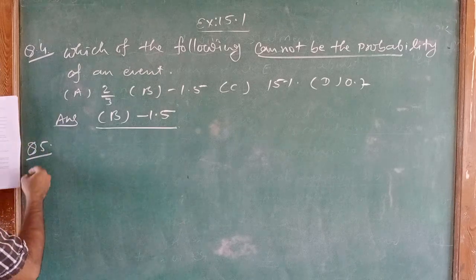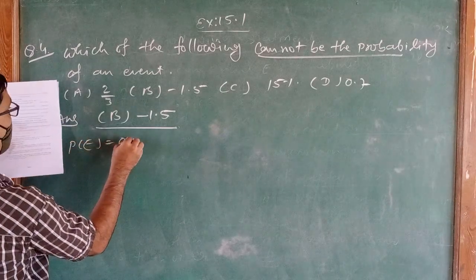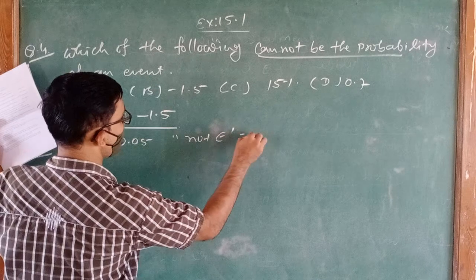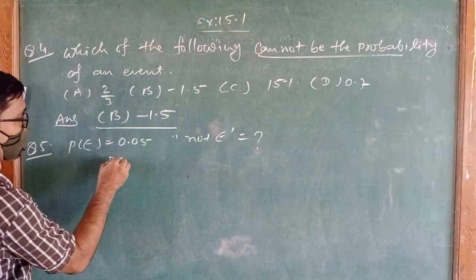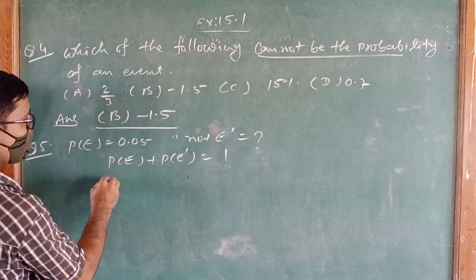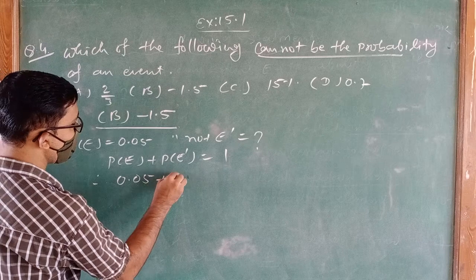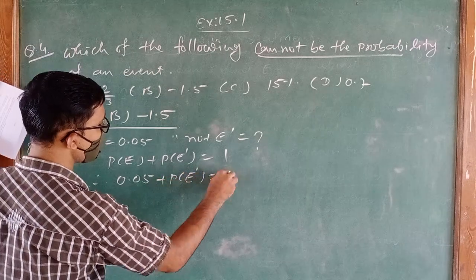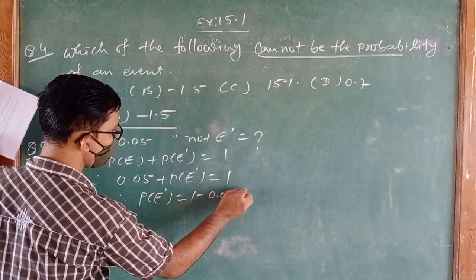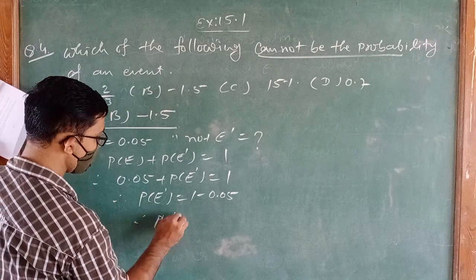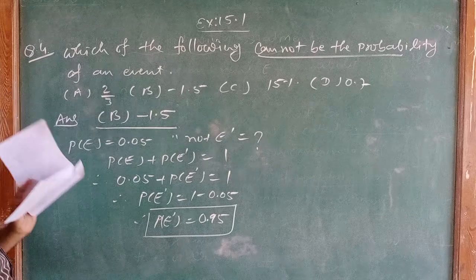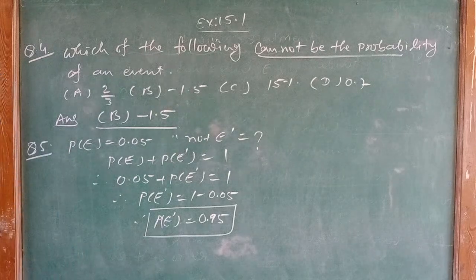Question number 5: P(E) = 0.05 is given. What is the probability of not E? We know P(E) + P(E dash) = 1, so 0.05 + P(E dash) = 1, therefore P(E dash) = 1 − 0.05 = 0.95. That is our answer.